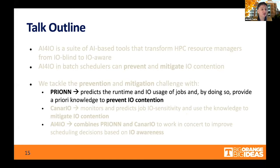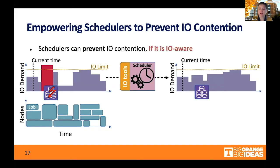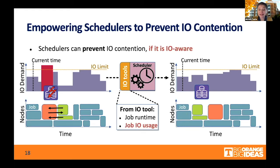Let me start by looking at Pryon first. We start with the challenge of being able to prevent I.O. contention. The idea is that at the current time, I need to identify aspects of future I.O. contention and reschedule the jobs in my queue so that this contention is prevented. What we need is not only to estimate the runtime of a job, but also to estimate or predict the I.O. usage of a job.